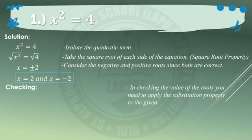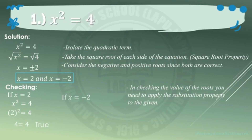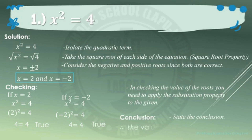Next, do the checking. In checking the value of the roots, apply the substitution property to the given. If x equals 2, substitute into the given: 2 squared equals 4, which gives 4 equals 4 — that is true. If x equals negative 2, substitute: negative 2 squared equals 4, giving 4 equals 4 — that is true. Therefore, the values of x are 2 and negative 2.